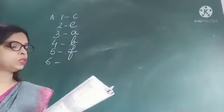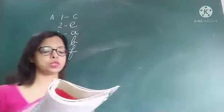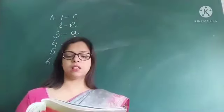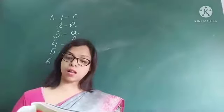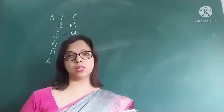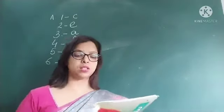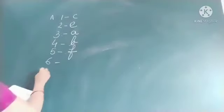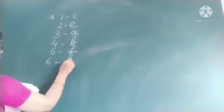Sixth: 'Noe knew it was the right thing to do but it was hard for him to say goodbye to his friend.' So six matches with D. The final answers are: one-C, two-E, three-A, four-B, five-F, and six-D.